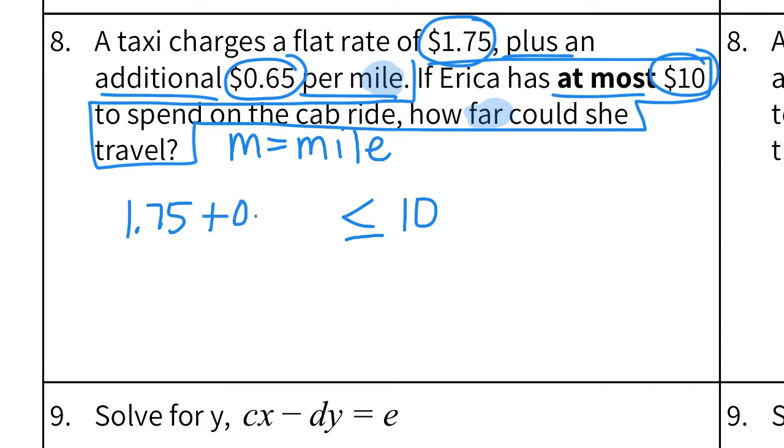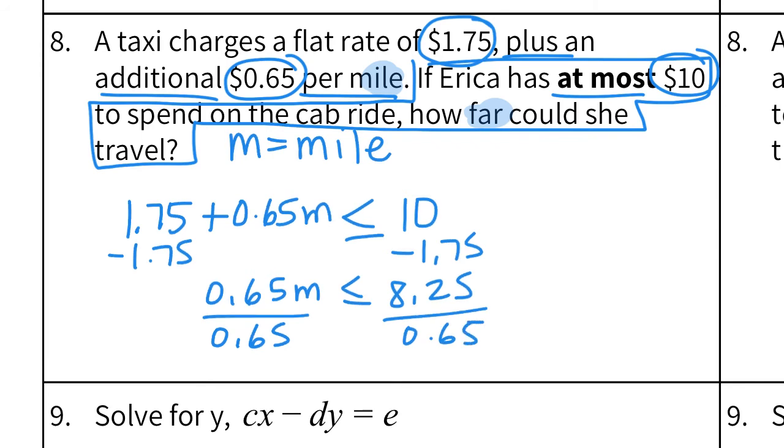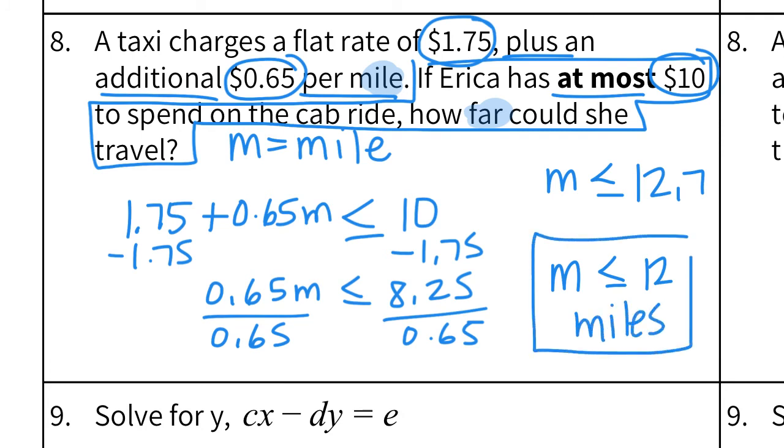So now it's our job to solve for M. Subtract from both sides. So that leaves me with 65M is less than or equal to $8.25. Then divide by the 65 cents. So now I have M is less than or equal to, it's a decimal, 12.7. But this is the real world. And remember we talked about this yesterday. When you are saying something like this, you can't just leave it like that. You have to round it. And you always, always, always round down. So I know that 0.7 makes you think you could round up. But in this case, round down. So M is less than or equal to 12 miles. So she can go at most 12 miles.